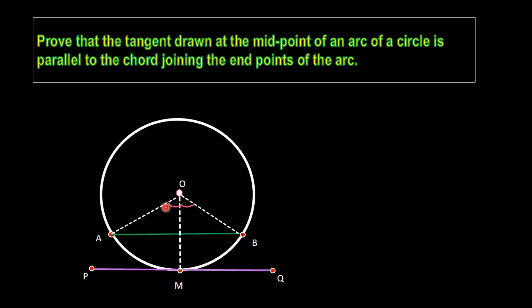We have to prove PQ is parallel to AB. For that, we use the fact that the angle OMQ equals 90 degrees. This is because the radius of the circle is perpendicular to the tangent at the point of contact — that is, OM is perpendicular to PQ — so that angle is 90 degrees.